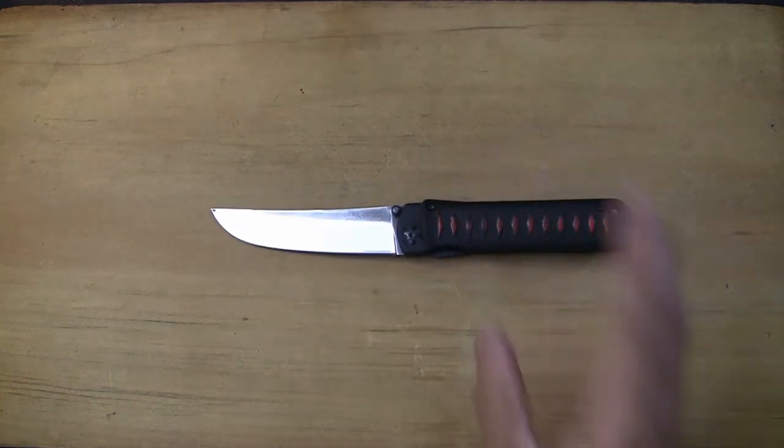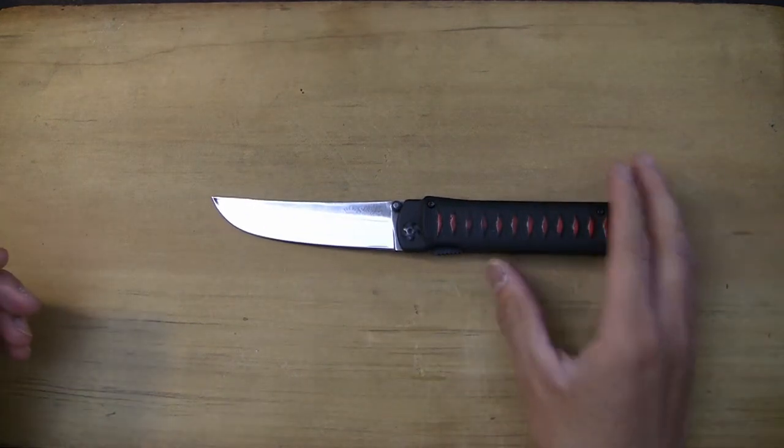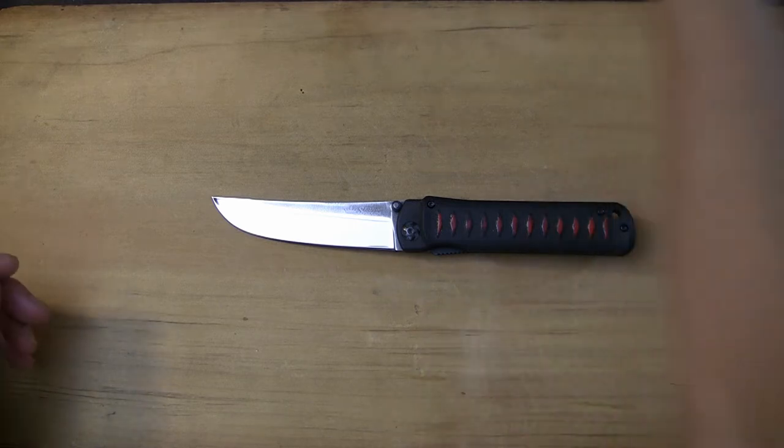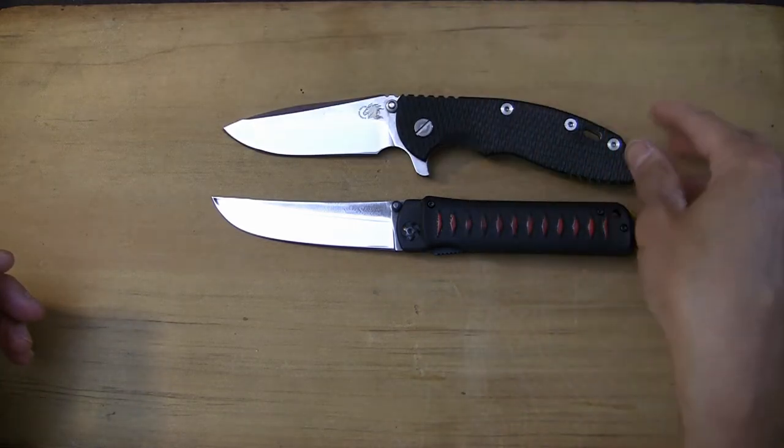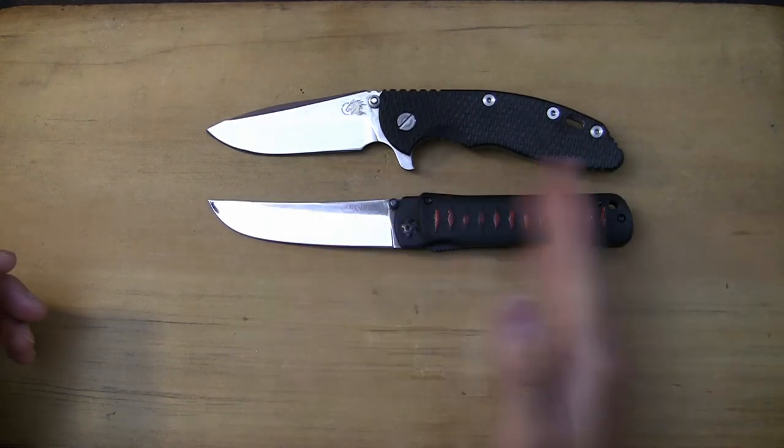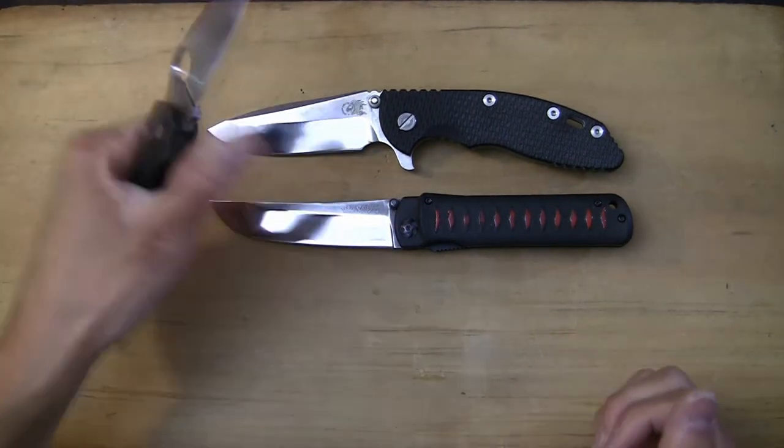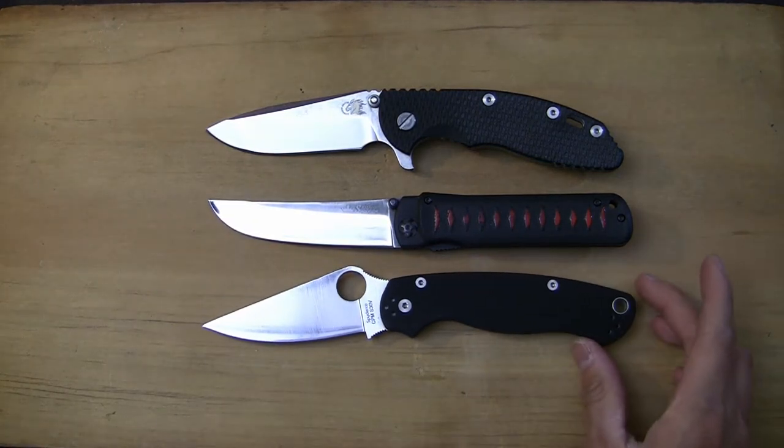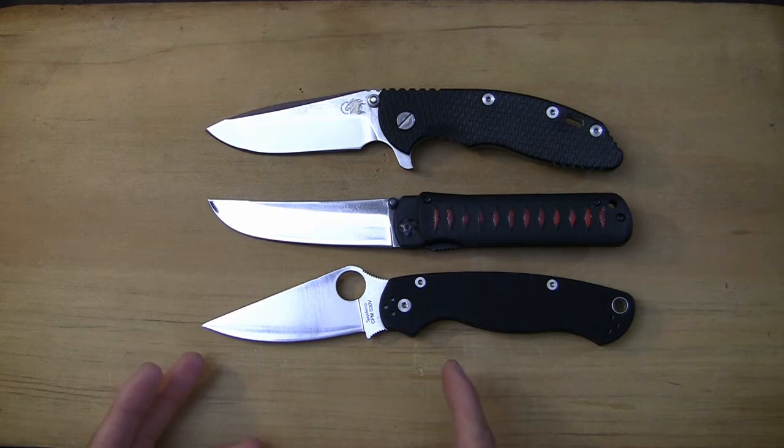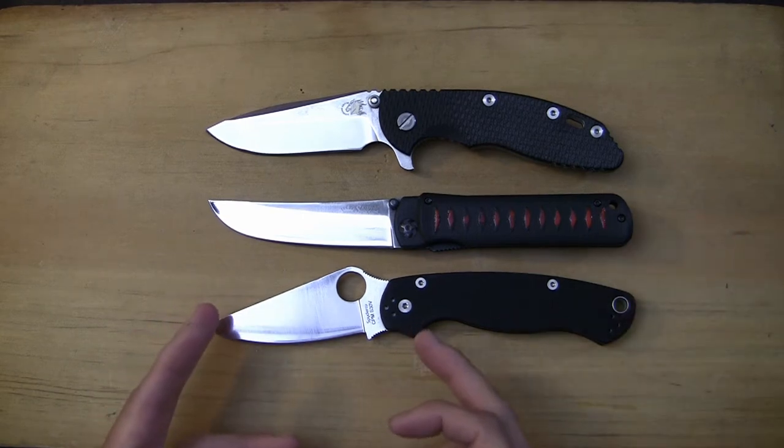Let's set this down on the table and do a quick size comparison. Let's start off with something very generic. We got the XM18 here, you can see it's fairly close in length. And then bring out the PM2. The PM2 has a very odd handle to blade shape ratio because it has a rather long handle but very short blade.